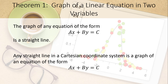The graph of any linear equation in two variables of the form ax plus by equals c is going to be a straight line. Furthermore, any straight line on a Cartesian coordinate system is the graph of an equation of this form. So linear equations correspond to straight lines.